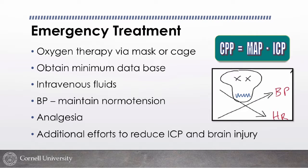To decrease intracranial pressure: give analgesics — pain causes catecholamine surges and we want them comfortable regardless. Additional efforts to reduce ICP include osmotic agents. In trauma patients I generally consider isotonic crystalloids, hypertonic saline, and blood products. Hypertonic saline is useful in well-hydrated trauma patients: it pulls fluid from the interstitial space into the intravascular space, resuscitating quickly with smaller volume. If the patient is severely dehydrated there's nothing to pull on.